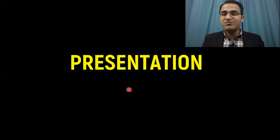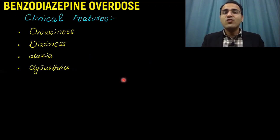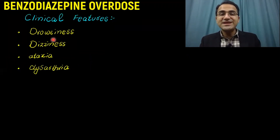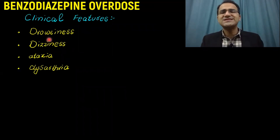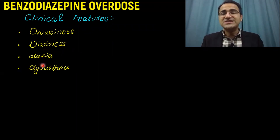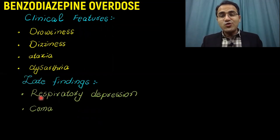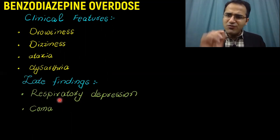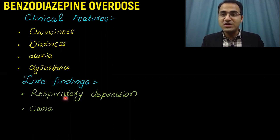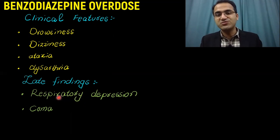The presentation of a patient with benzodiazepine overdose is CNS depression. Clinical findings include drowsiness, sleepiness, dizziness, ataxia, dysarthria, and impaired speech. Late findings include respiratory depression, which is a very important side effect of benzodiazepine overdose — this is the complication most to be feared.